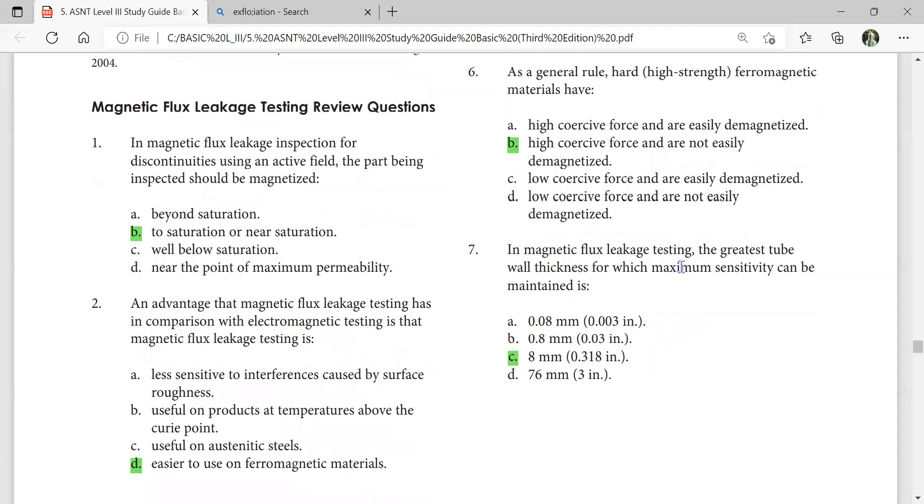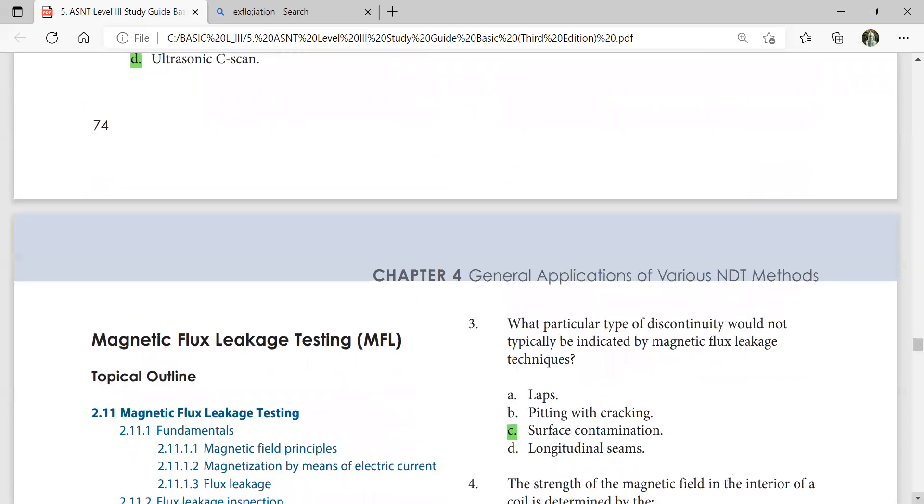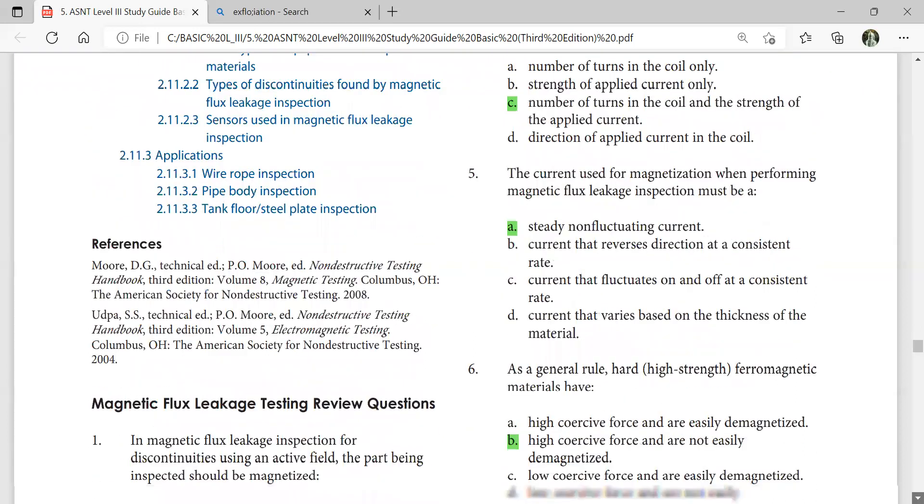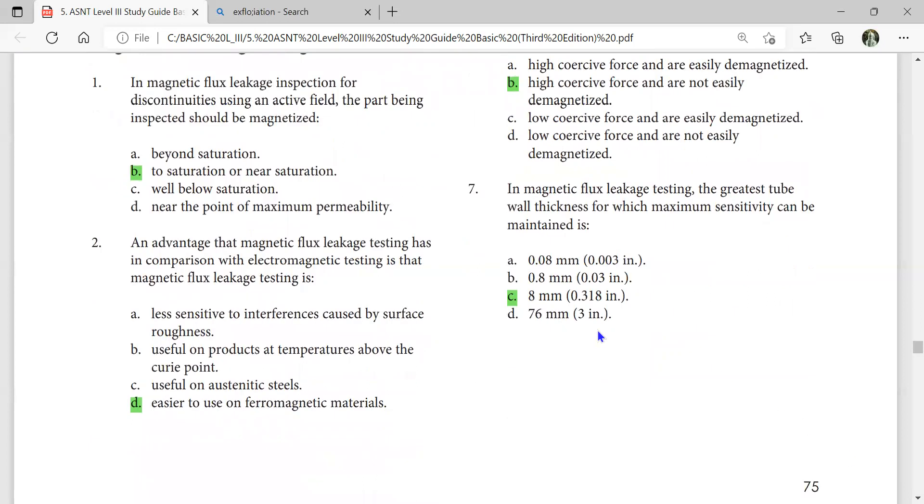In magnetic flux leakage testing, the greatest tube wall thickness for which maximum sensitivity can be maintained. C is the right answer here, it is up to 10-12mm. So that's why they are writing 8. If the highest 8 is okay, 8 or 10, they will sometimes make 10, sometimes make 8.